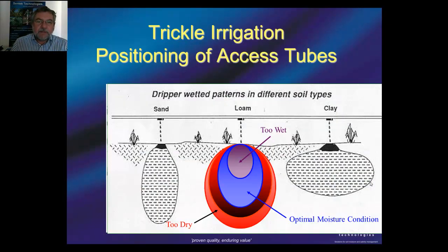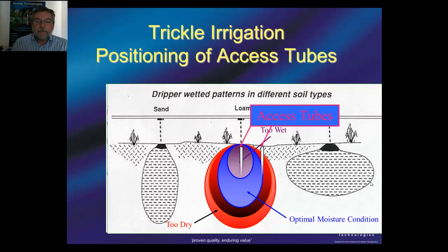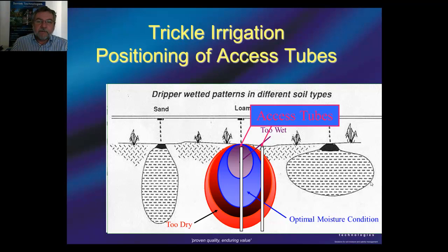Wetting patterns: here is a nice picture to show you that in sand it has a more elongated oval form, and in clay it really takes the shape of a proper onion. And again, we recommend representing that sort of scenario with two probes.